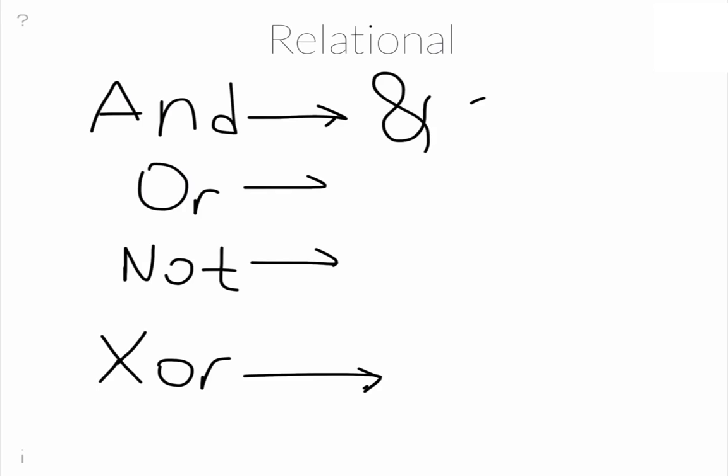Which is 2 ampersands. And this is two vertical bars. And this is tilde, only tilde. And this is XOR as a function. So you insert your expression on the side of the function.